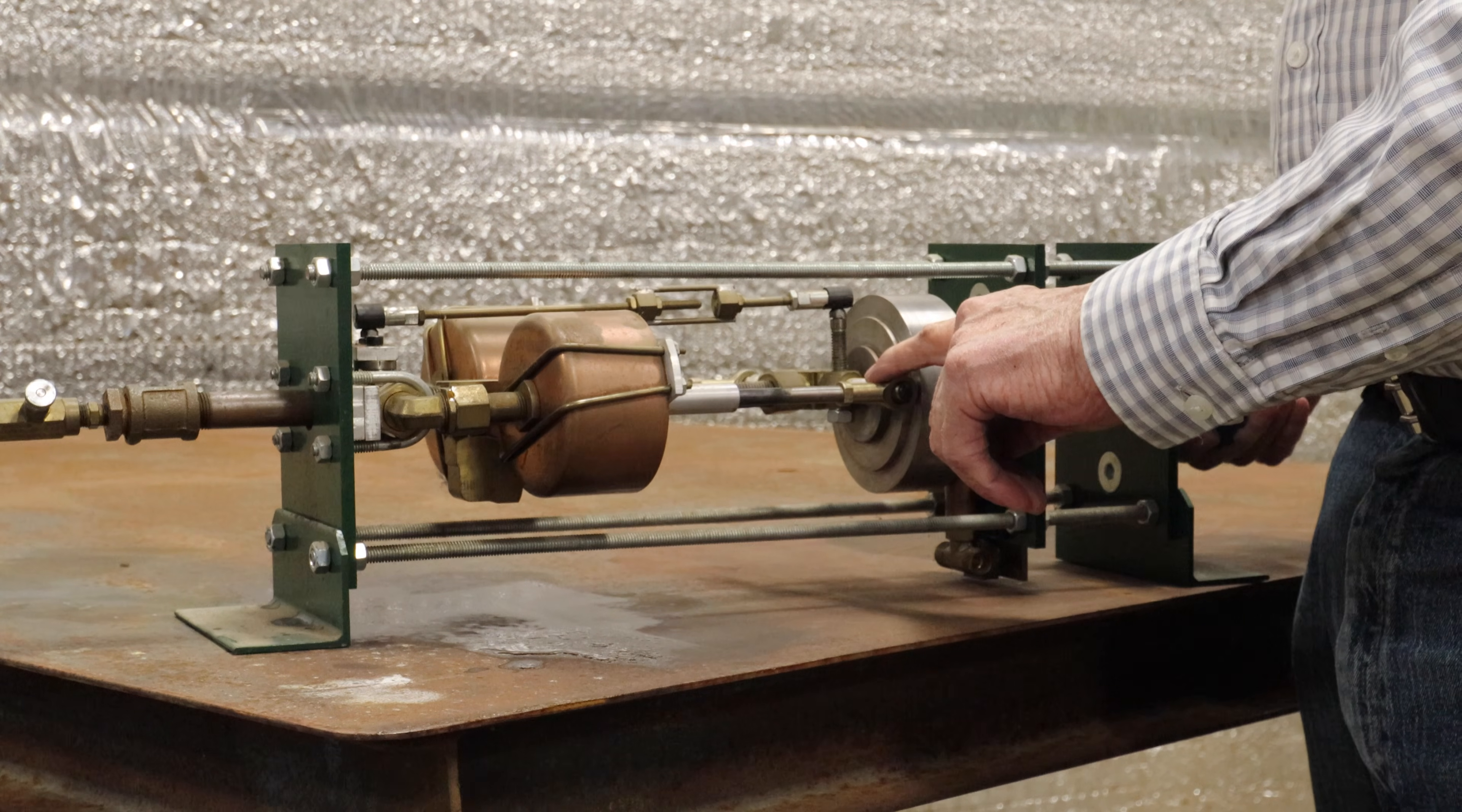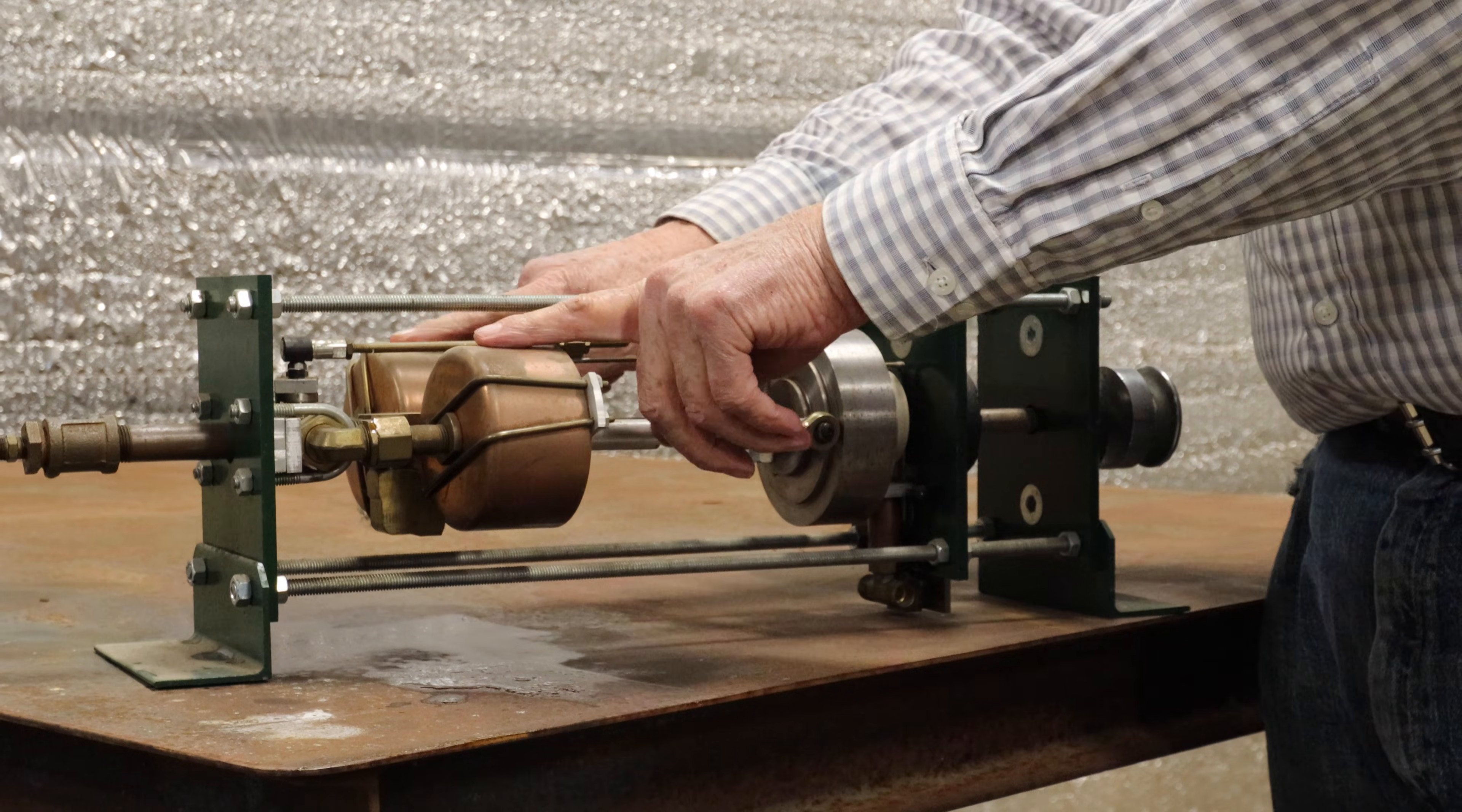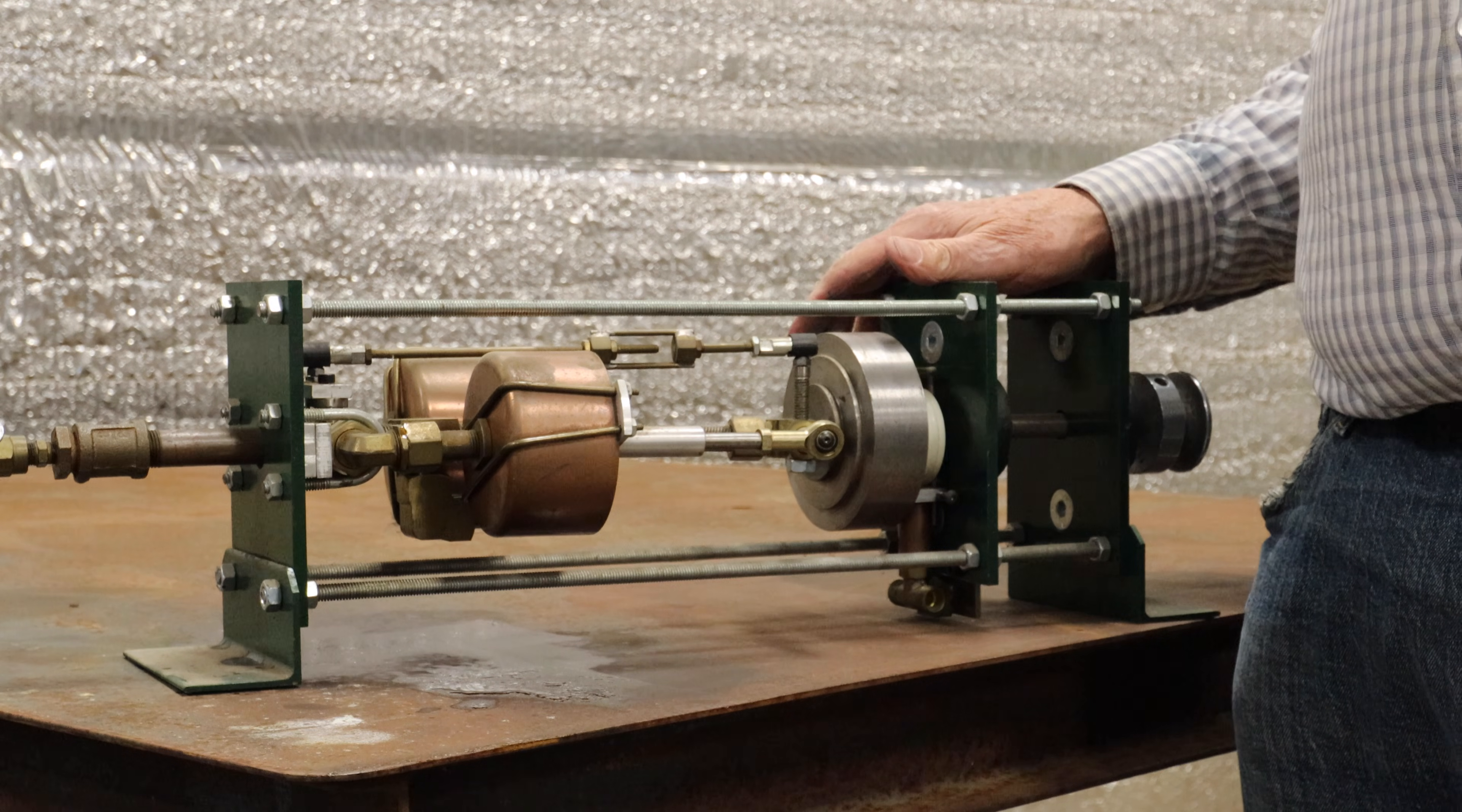This is a wobble plate. It's actually called a Z engine, after the capital letter Z. And this has a little shaft there sticking out at an angle. So these two pistons go back and forth. It makes this thing here go back and forth, and it makes this thing go around. So he has succeeded in making a steam engine which does not have a connecting rod or a crankshaft.